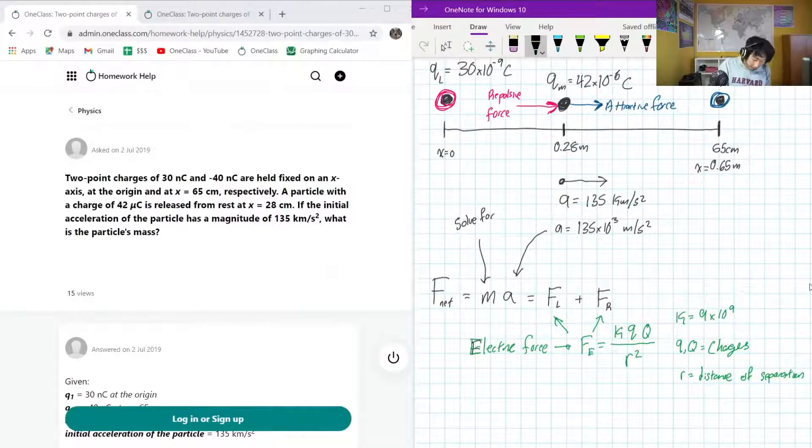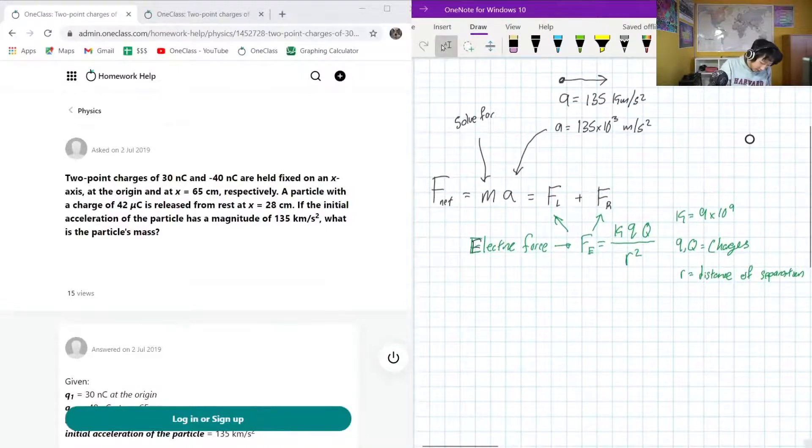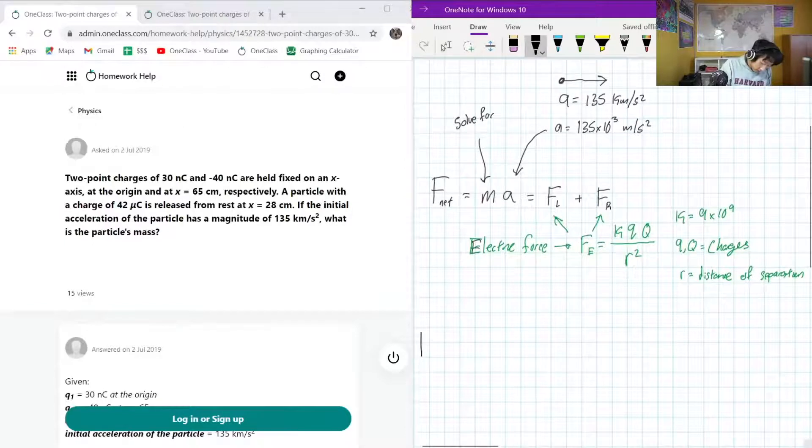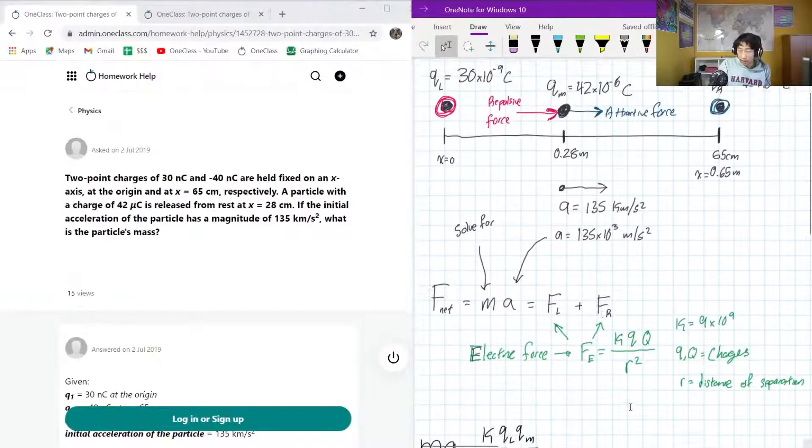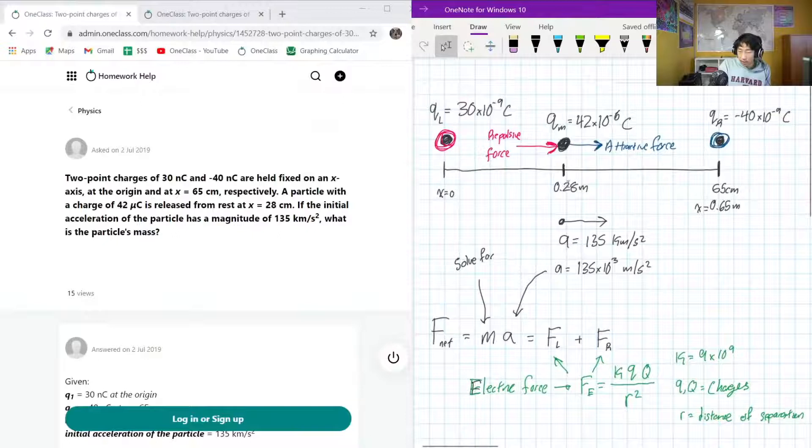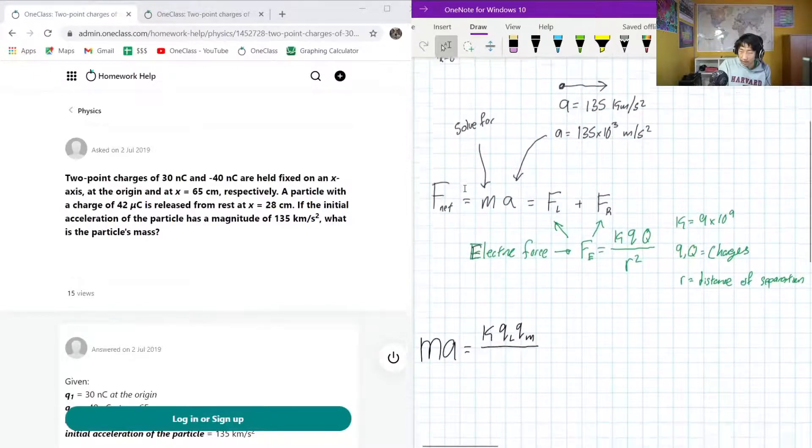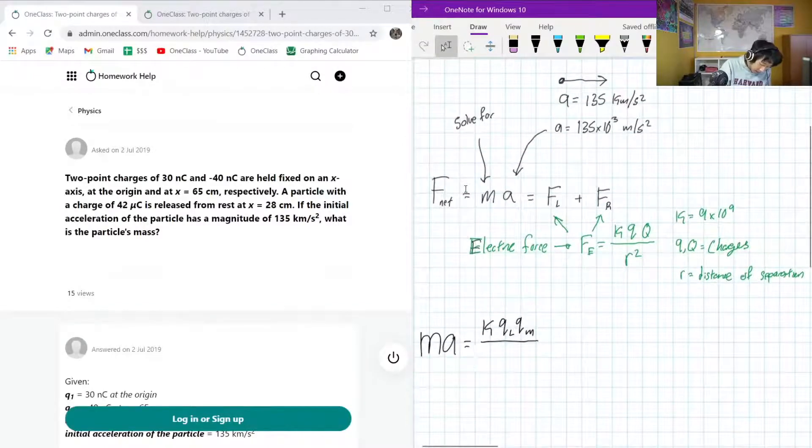So, let's sub that in and see what it looks like. So, instead of writing F net, I'll just write MA, because we know that they have to be the same. And here, it's going to be KQLQM over, now, it's going to be the separation distance between them. It's going to just be 28. That's the separation distance between QL and QM. So, it's 28 minus 0, fairly straightforward.